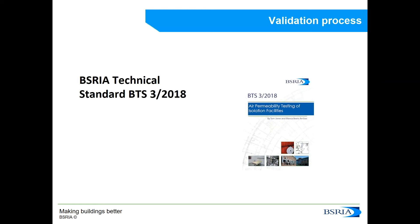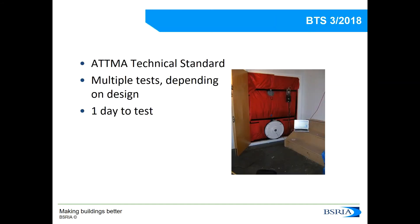Air tightness is a way to measure what the air leakage in a room is. For this purpose, BISRIA has published a technical standard, BTS3 2018, which is free to download from the BISRIA webpage and explains how to do an air tightness test in an isolation suite. This test is based on the ATMA technical standard, so an engineer who knows how to do an air tightness test can carry out these tests very easily — instead of testing a building or house, we carry them out in an isolation suite. A series of tests are proposed depending on room design, and they should only take one day.